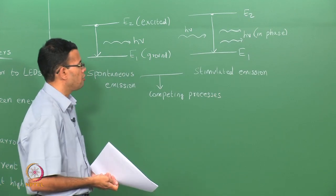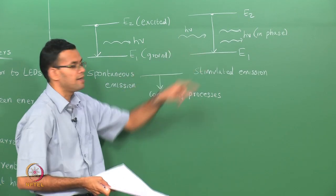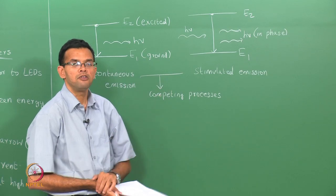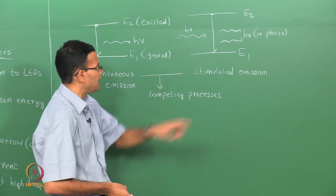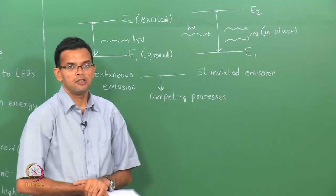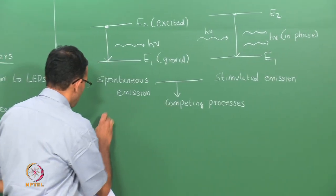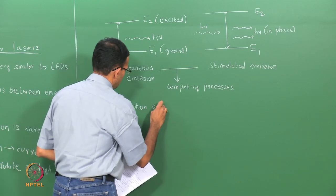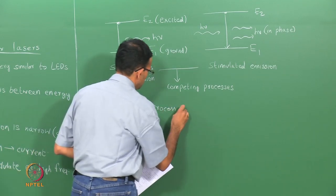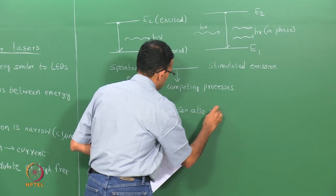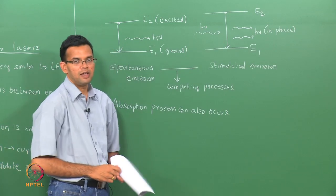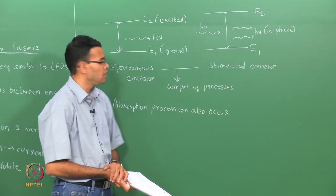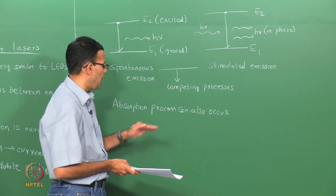The reverse process can also occur. When we have incident light, instead of causing an electron to fall from the excited to the ground state, this light can be absorbed by an electron in the ground state and take it to the excited state — so an absorption process can also occur. In the case of a laser material, we have a number of competing processes: stimulated emission, spontaneous emission, and absorption.